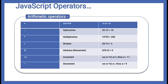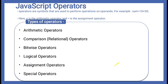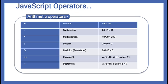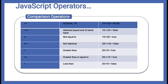For addition: 10 + 20. Subtraction: 20 - 10. Multiplication: 10 * 20. Division, modulus — modulus is for remainder. Increment: double plus (++). Decrement: double minus (--). Similarly, we use comparison operators. Double equal-to works as 'is equal to' — if both values are equal, it returns true, otherwise false. The triple equal-to operator (===) checks the type as well.